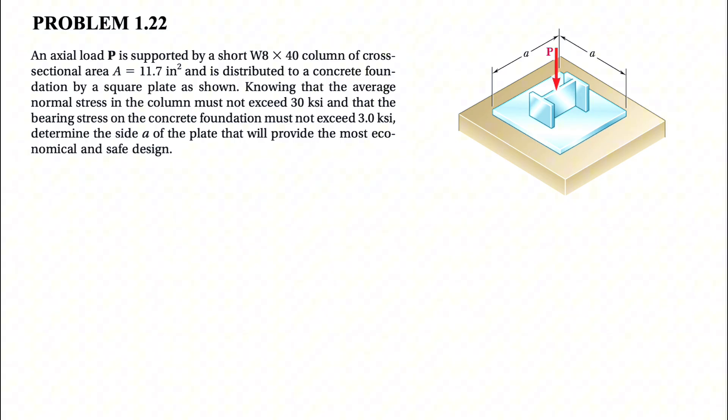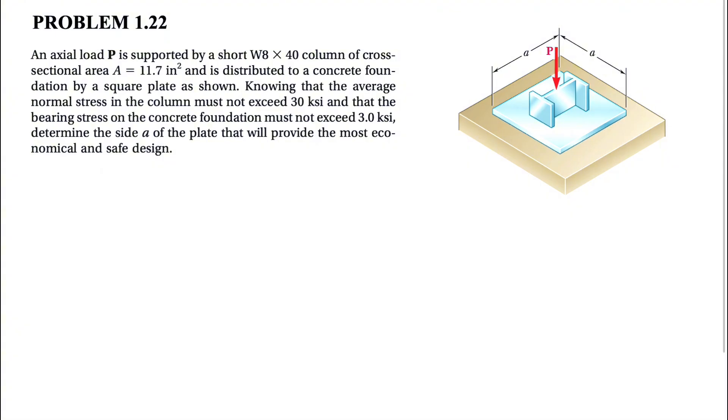We have an axial load P supported by a short column of cross-sectional area 11.7 inches squared. The column type W8 by 40 is not really important here. What we care about is the area for that column, which distributes the load to a concrete foundation by a square plate.